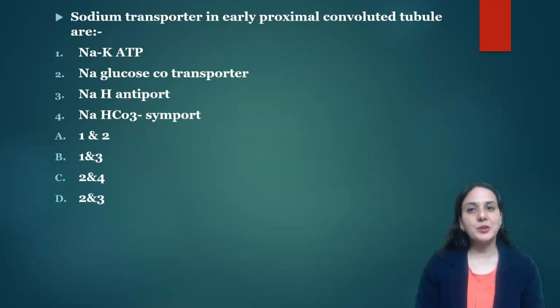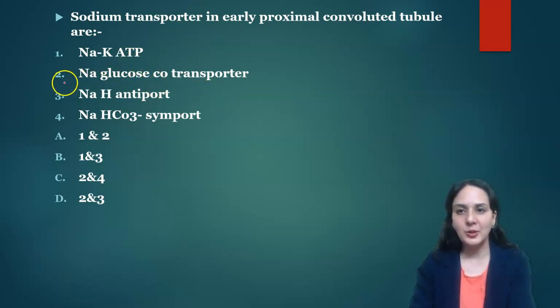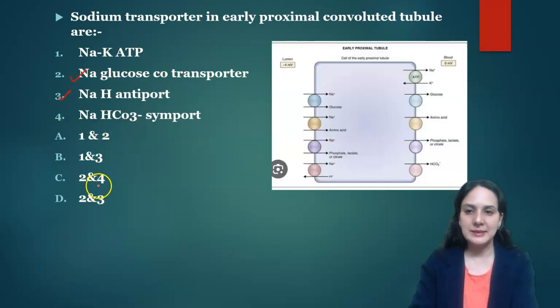Next question was: sodium transporter in early proximal convoluted tubule? We know that glucose is reabsorbed in early proximal convoluted tubule with help of sodium glucose co-transporter, that is SGLT2. So the answer is sodium glucose co-transporter along with sodium hydrogen antiporter. So the answer is D.